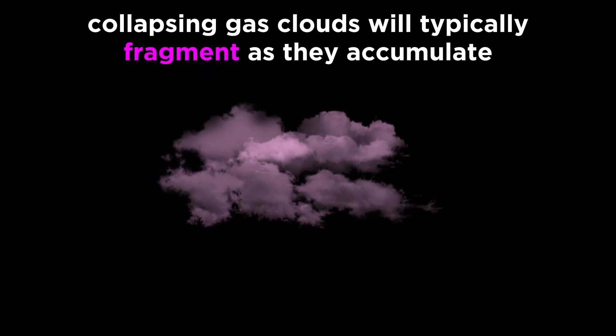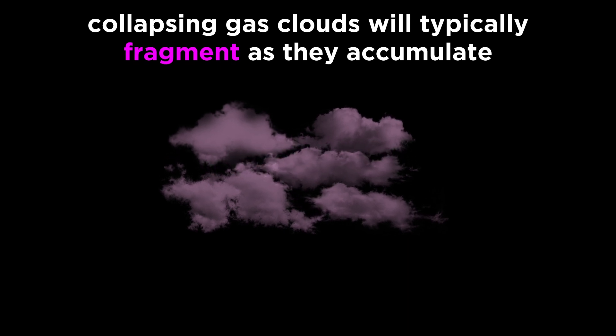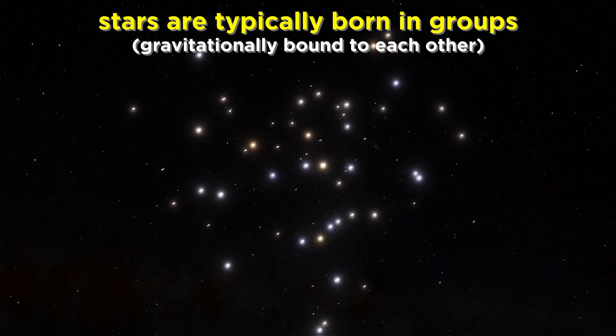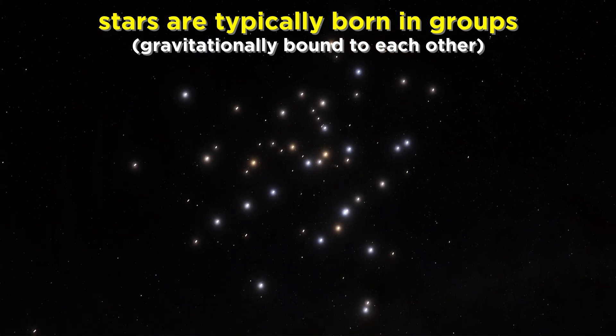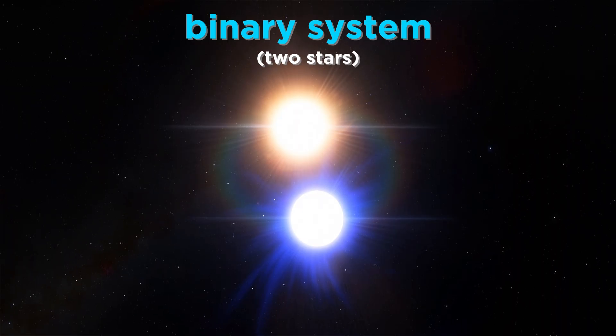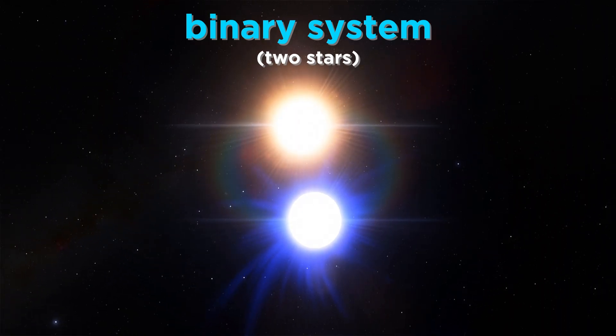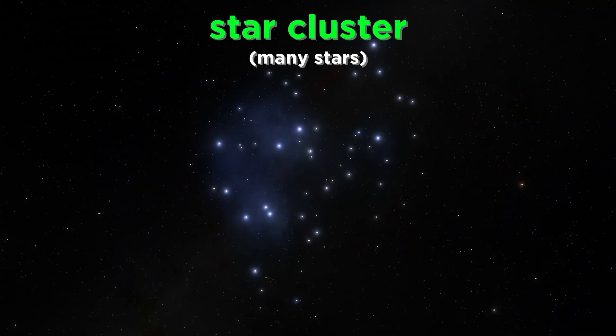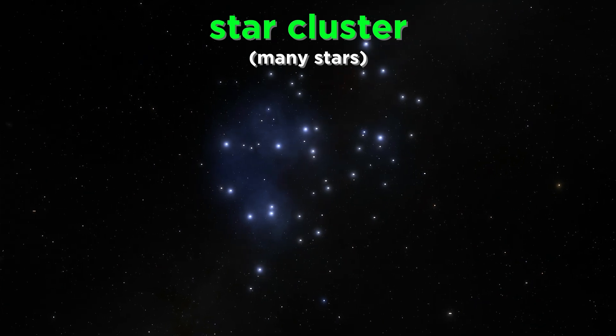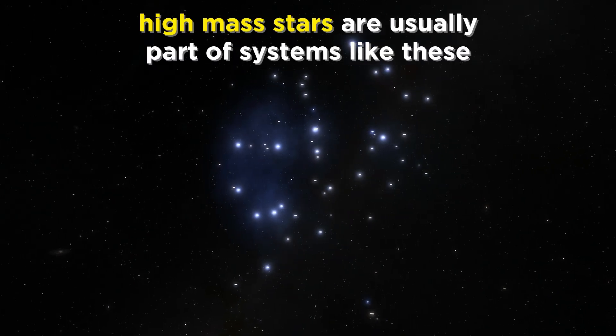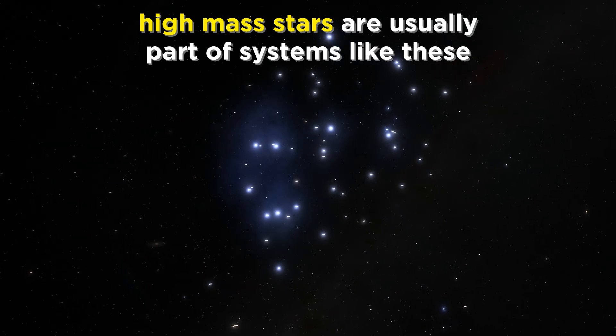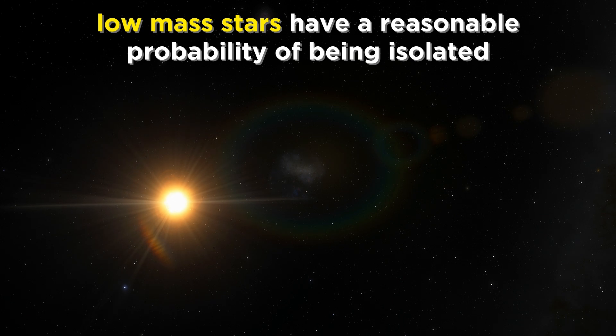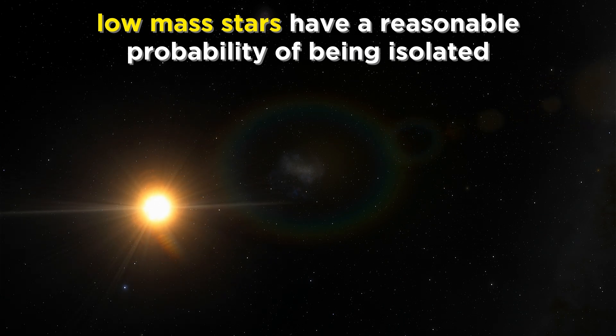Next, we want to understand that since collapsing gas clouds typically fragment as they accumulate, stars are typically born in small groups. The resulting stars are therefore often gravitationally bound, forming binary systems if only two, or larger multi-star systems if more than two. Even larger systems of stars would be called star clusters. It is actually the case that most high mass stars are found in such systems, and only for lower mass stars like ours is a single star system the more likely scenario.